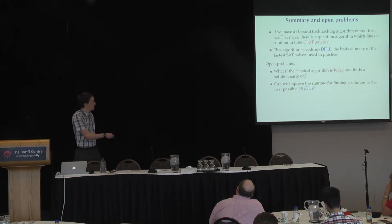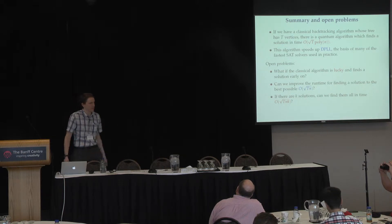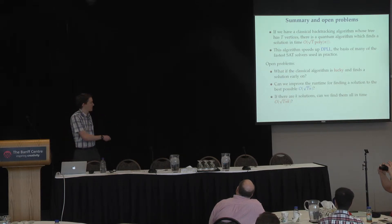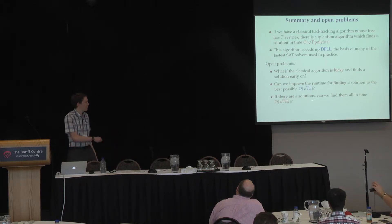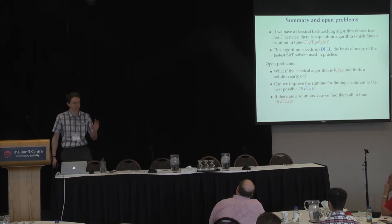At the moment the runtime is n to the three over two, plus some polylogs. Also, if we have k solutions to the CSP, can we find all of them in time square root of t times square root of n times square root of k? Because at the moment we have square root of t times n to the three over two times k, which is not always better than the classical algorithm if there are many solutions.